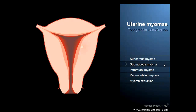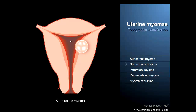When the tumor progresses towards the cavity of the uterus, it causes a protrusion of the endometrium that can lead to bleeding between periods, cramps, abortion, and even fetal deformities because of the shortage of space within the uterus.